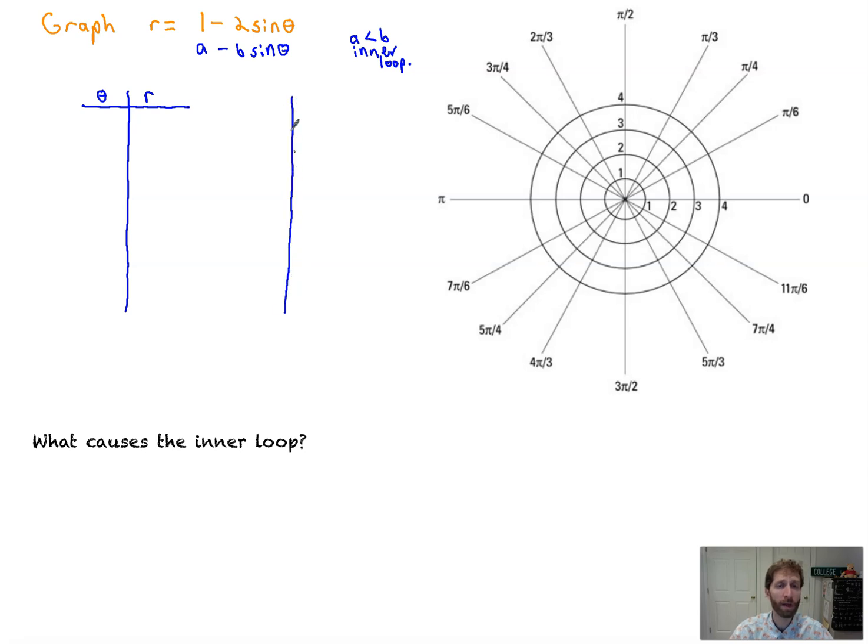First things first, we have a function of the form a minus b sine theta. Notice here that a is less than b, so we're going to have an inner loop. We'll talk about what causes the inner loop in a little bit. Now this graph and all of these graphs, the limacons, go from 0 to 2 pi. We're going to pick some values around the unit circle, some nice values to see what our picture looks like. So we've got 0, pi over 2. Remember, keep that picture in your head. Use your symmetry. Find your max values, your min values, maybe zeros if they're there.